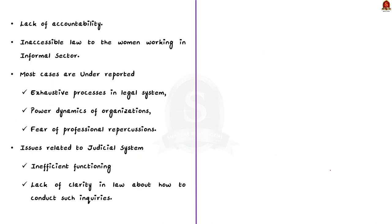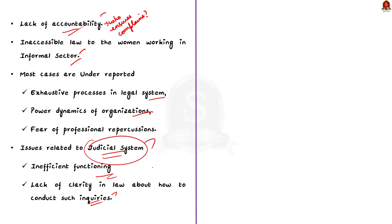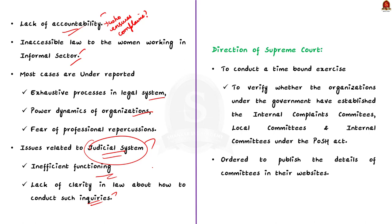Another main issue is the improper constitution of Internal Compliance Committees — most had an inadequate number of members or lacked a mandatory external member. There is also no clear mention in the POSH Act about accountability — who ensures compliance and who will be held liable if provisions are not followed. The POSH Act is largely inaccessible to women working in the informal sector, and many sexual harassment cases are hugely underreported due to exhaustive legal processes, power dynamics within organisations, and fear of professional repercussions. The Supreme Court directed states and union territories to conduct a time-bound exercise to verify whether organisations under the government have established the required committees, and ordered them to publish committee details on their websites.